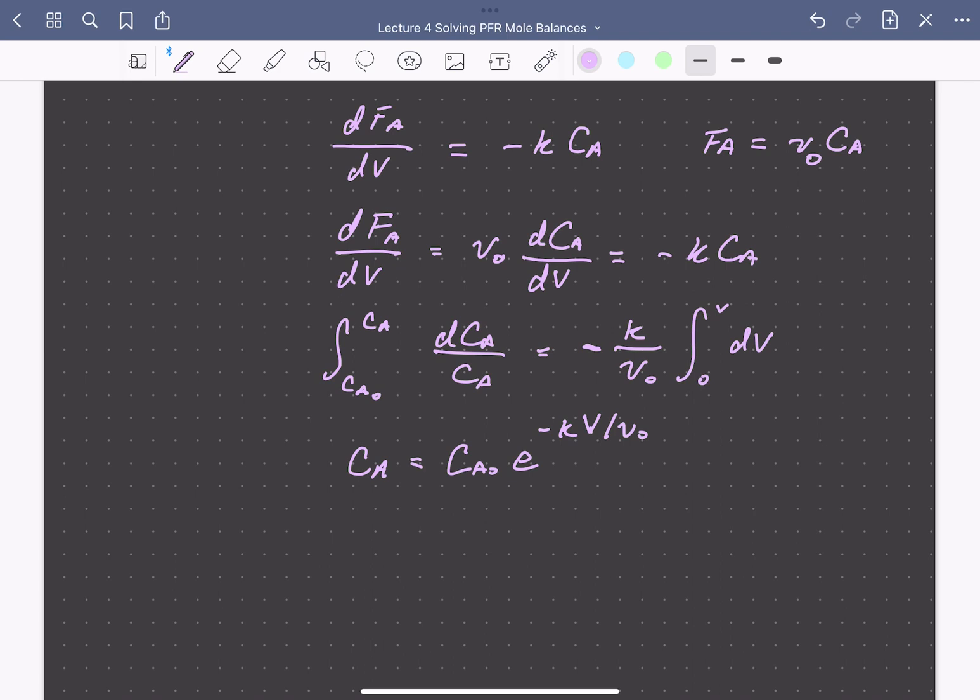We can define a term here, tau, as the volume of the reactor divided by the inlet volumetric flow rate. If we look at the units here, we have volume divided by the volumetric flow rate, so that's dividing by volume per time. This has units of time. What is the physical interpretation of this? We call this the residence time, and it's the time an average molecule spends within the reactor.